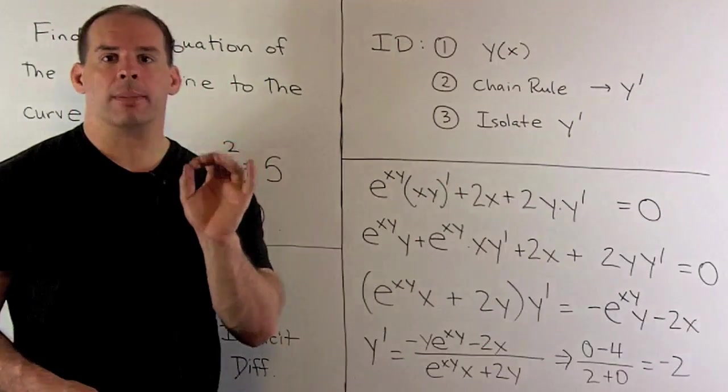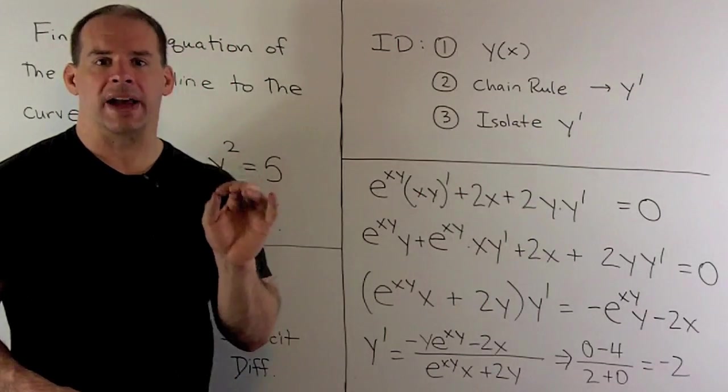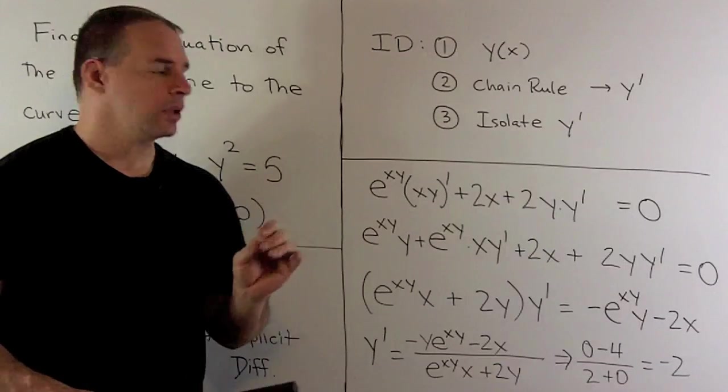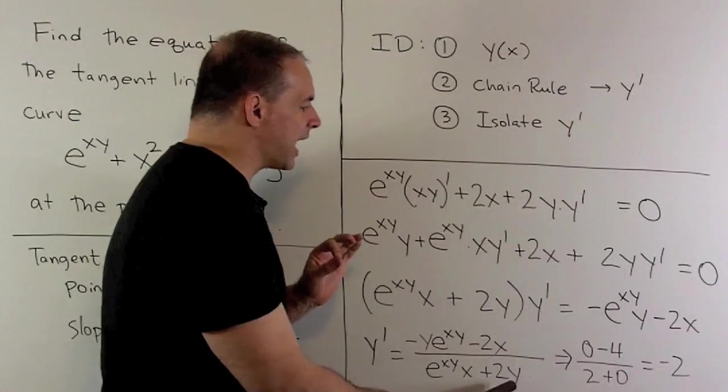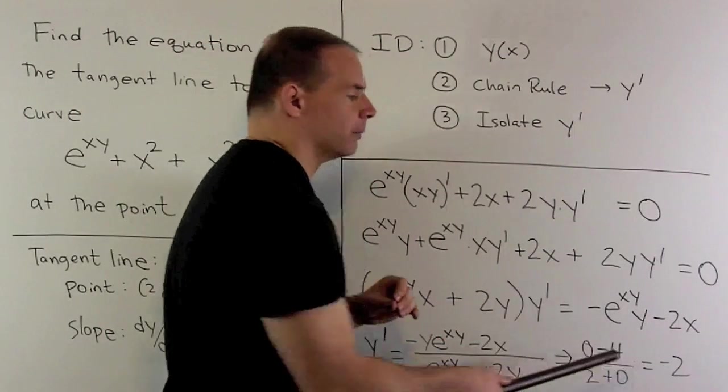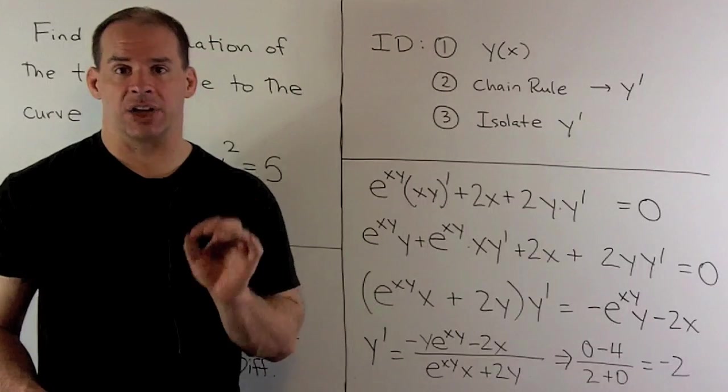Now, we want a number. So I'm going to put in 2 for x, 0 for y. When we evaluate, what comes out is going to be -2. So that's going to be the slope of our tangent line.